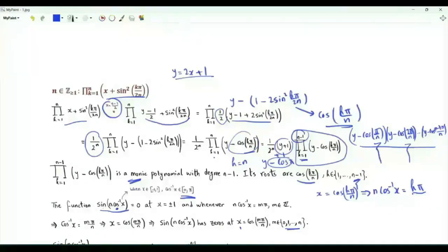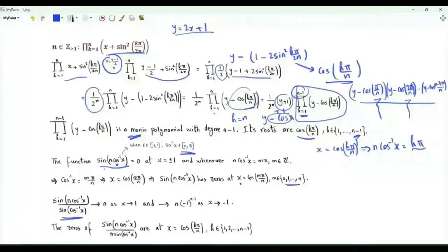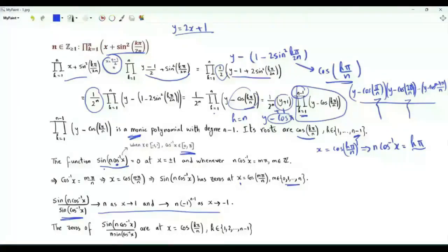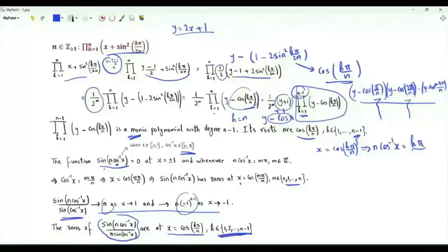Note that if x is 1, the inverse cosine is 0, and sine of 0 is 0. If x is minus 1, the inverse cosine of minus 1 is pi, and sine of n pi is also zero. If this function is divided by sine of the cosine inverse of x, we have zero in both the denominator and numerator when x is 1 or minus 1. These are removable singularities because we get a finite non-zero limit when x tends to plus or minus 1. The zeros of this function occur at x equal to cosine k pi over n, where k is in the set from 1 to n minus 1.